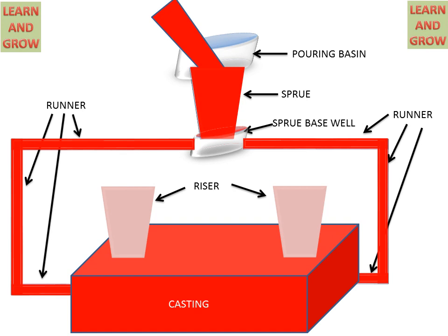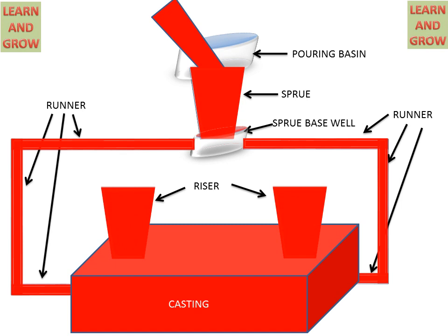After filling the cavity, this molten metal fills the risers. After cooling, the final product is made and we can extract the final product from the casting. This is the gating system for providing a smooth casting process and smooth flow of molten metal.